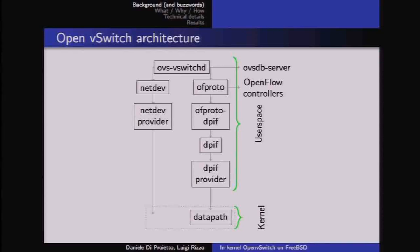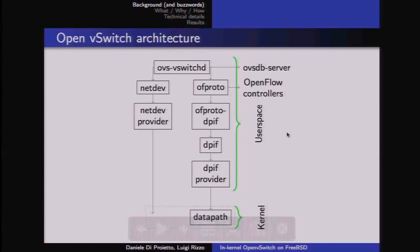The architecture of OpenVSwitch: the upper part runs in user space and contains modules that interact with the controller, accept rules, and establish a path with the data path to inject rules or extract packets needing user space processing. The bottom part — which can be in the kernel or in user space — actually moves packets and applies modifications.